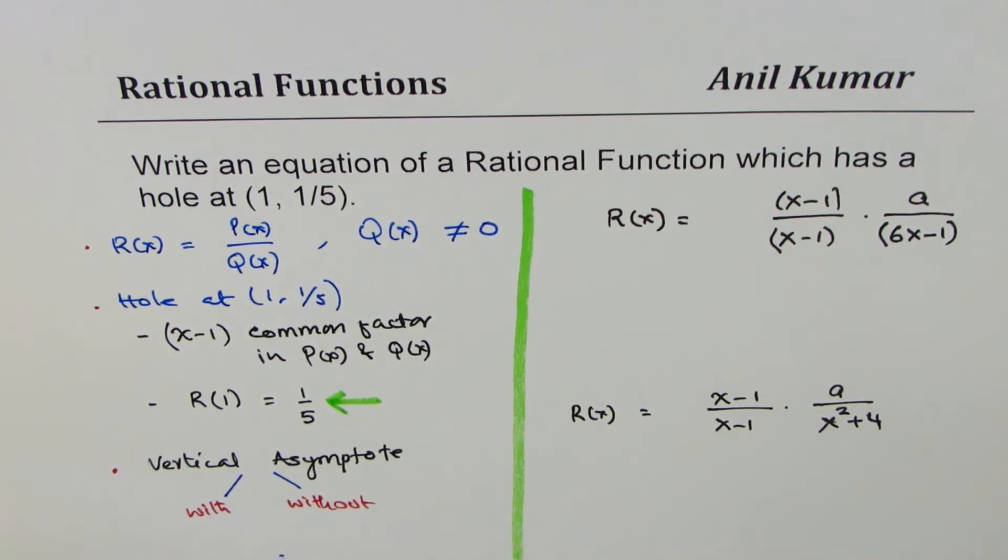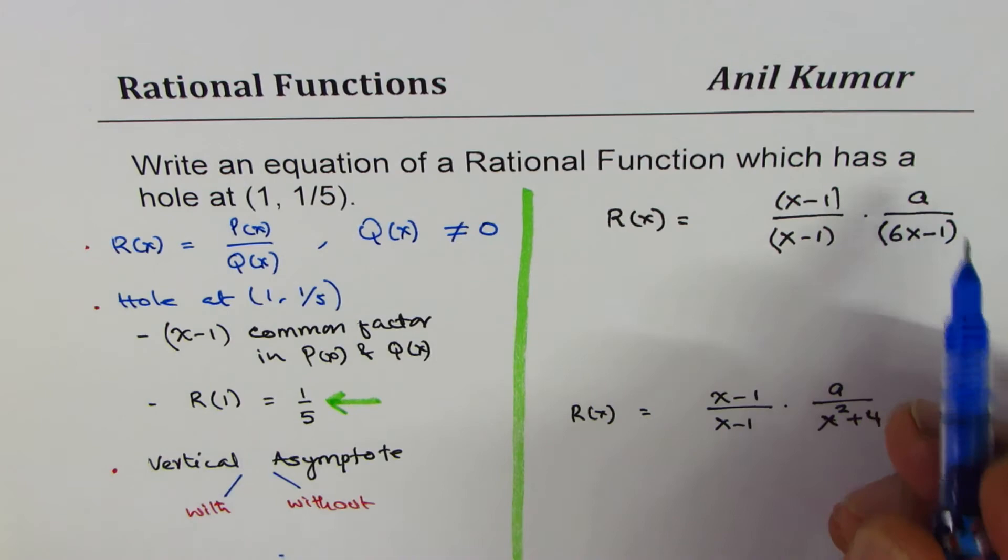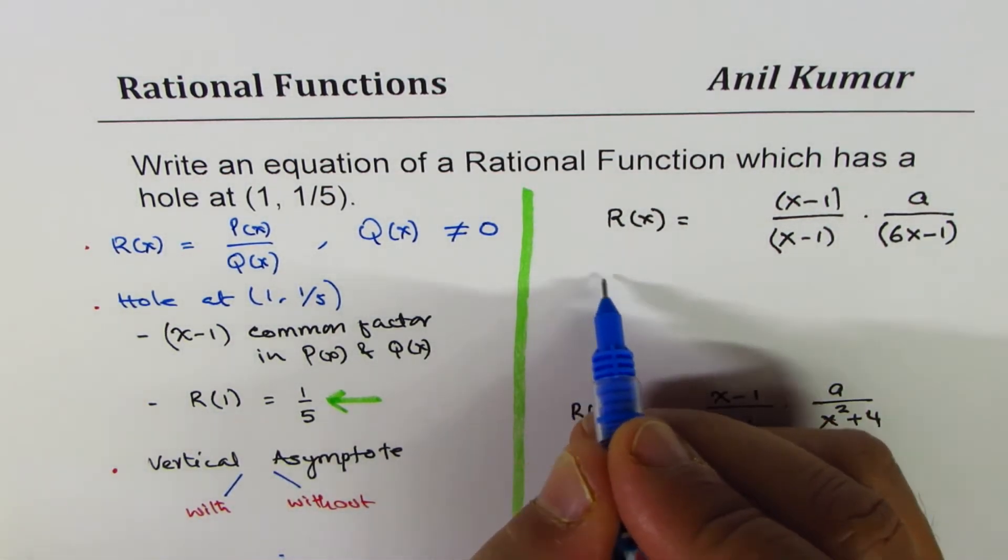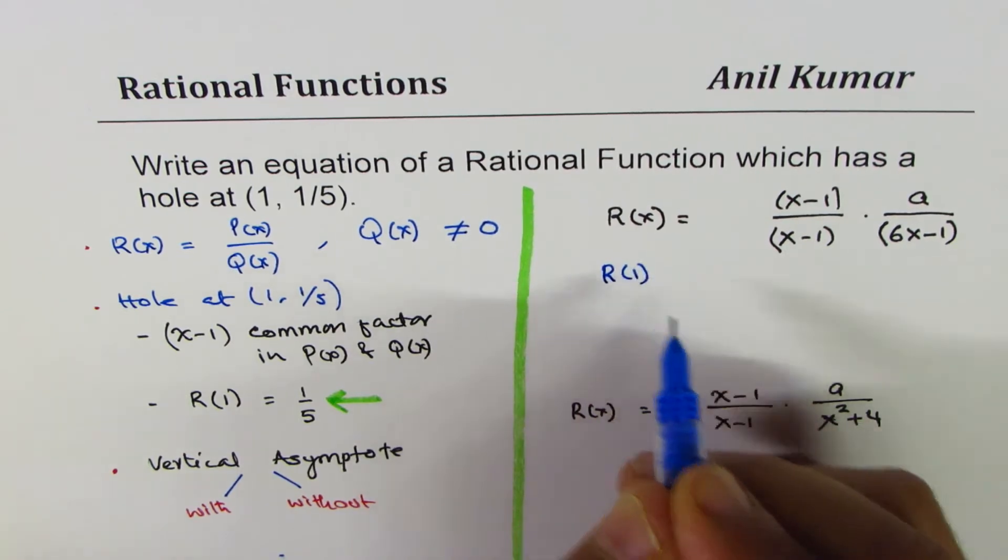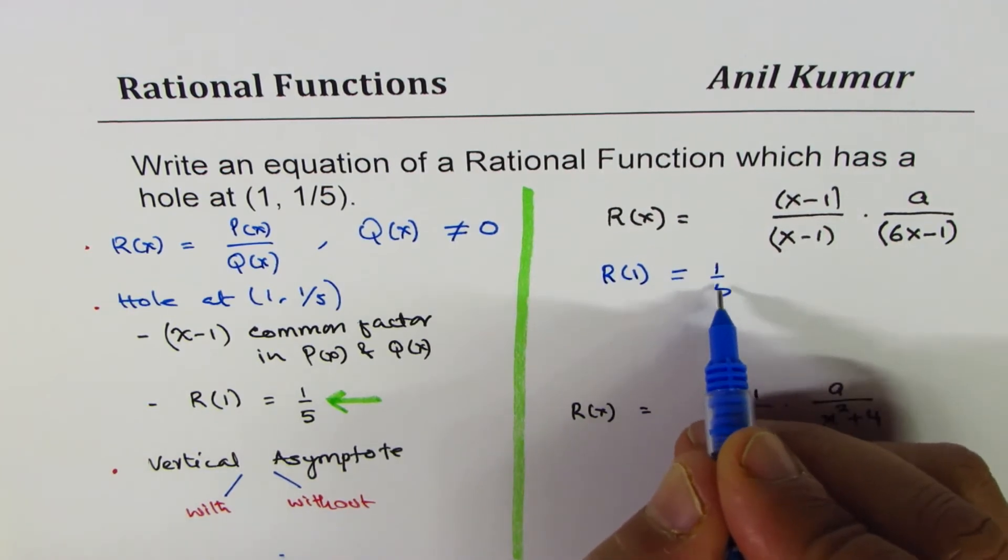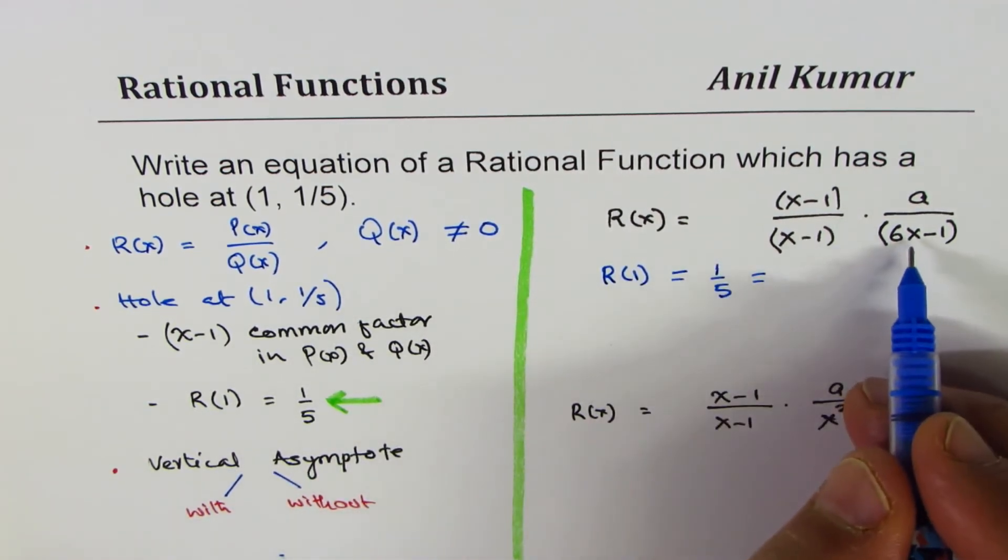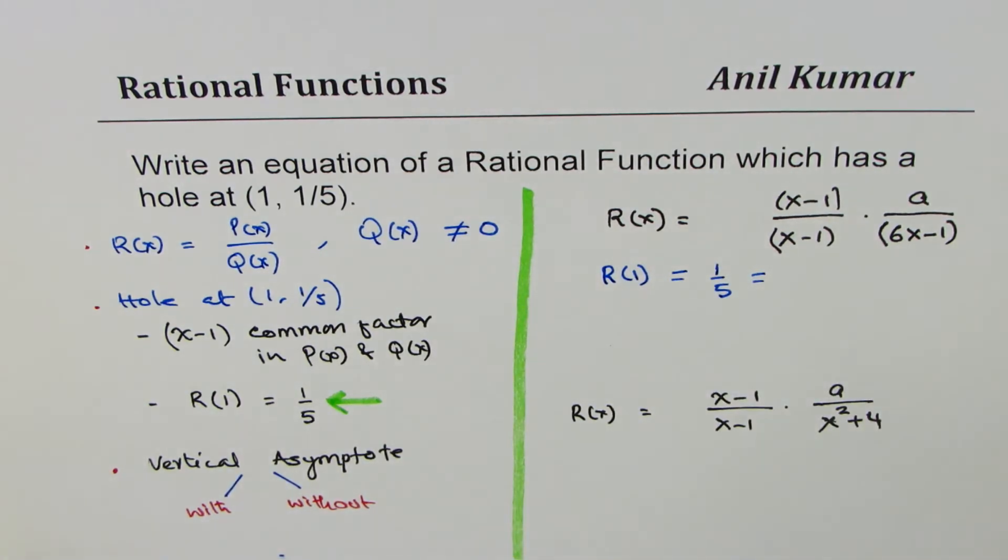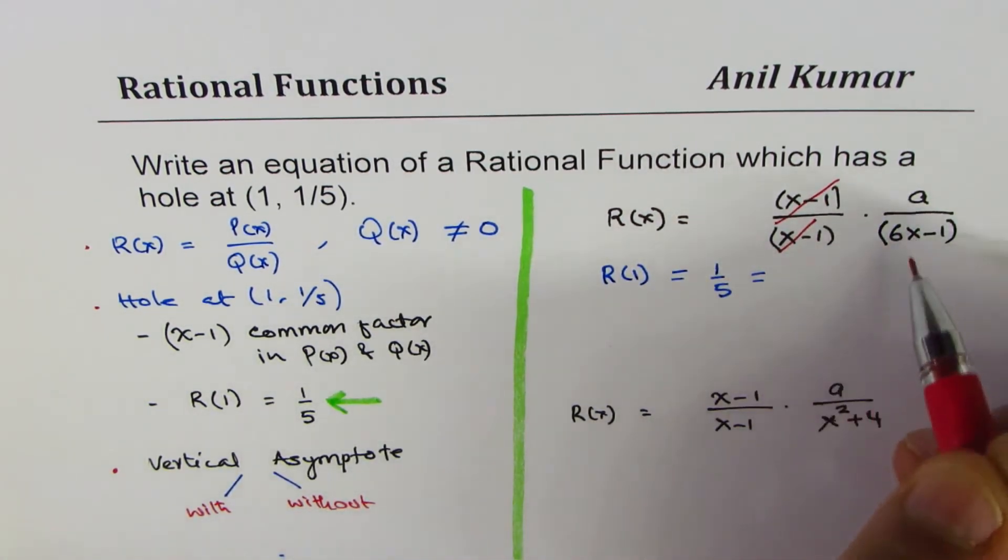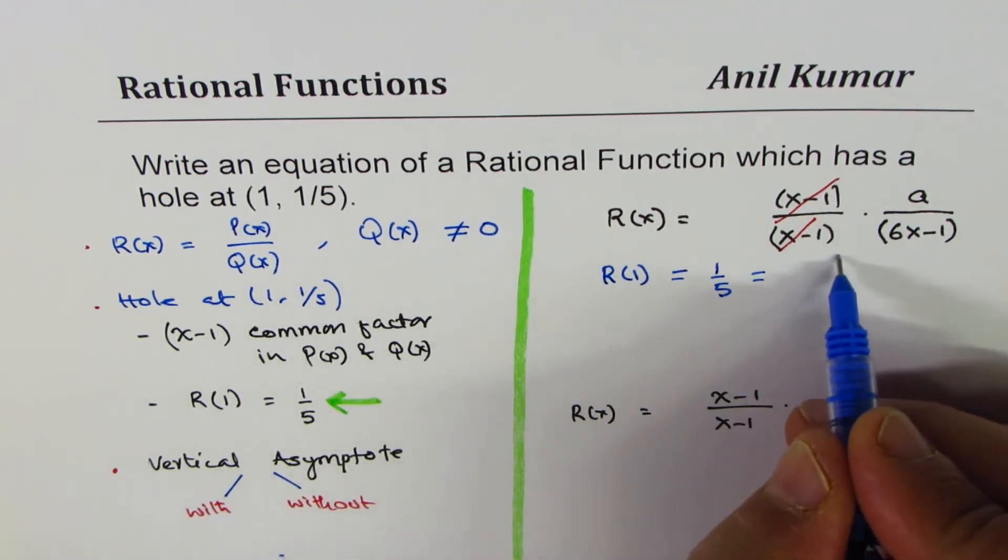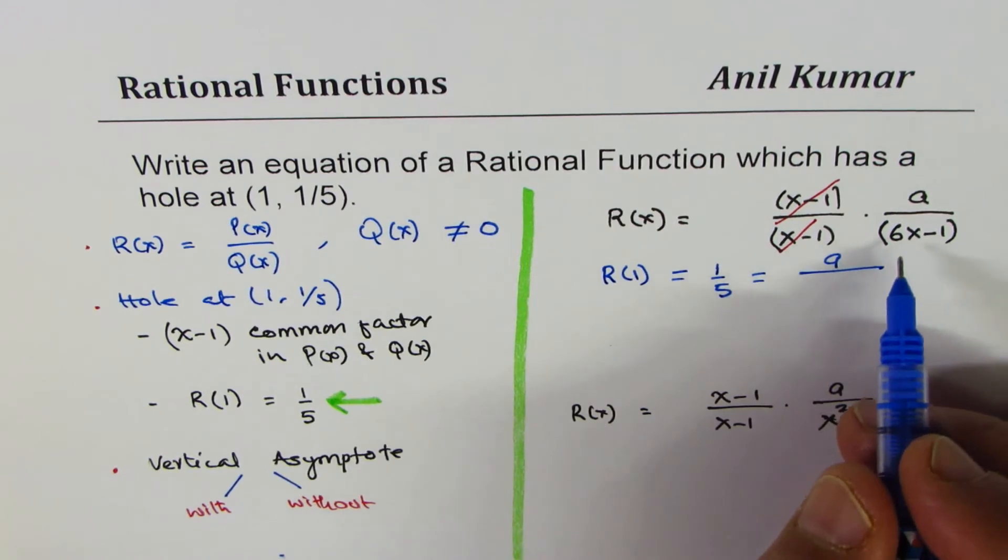Now the idea is to find the value of 'a'. So the value of 'a' could be found by using R(1). So R(1) should be equal to 1/5. We'll put 1 here. We know these factors cancel out, and that is why we are able to substitute 1.